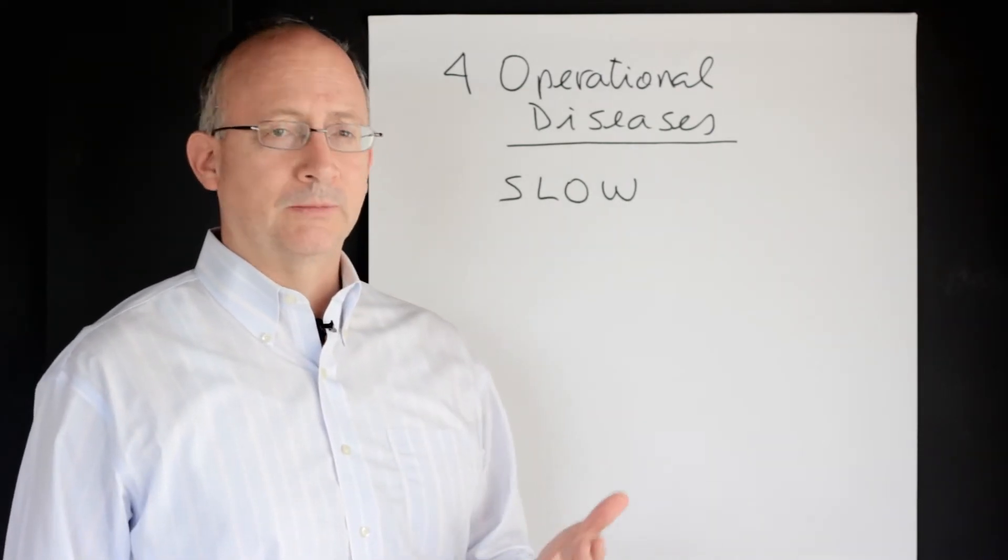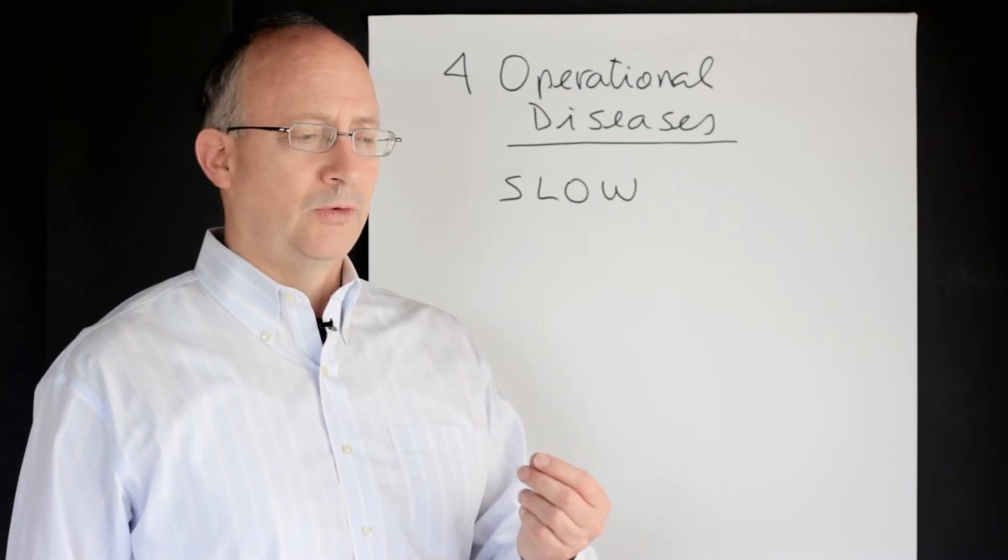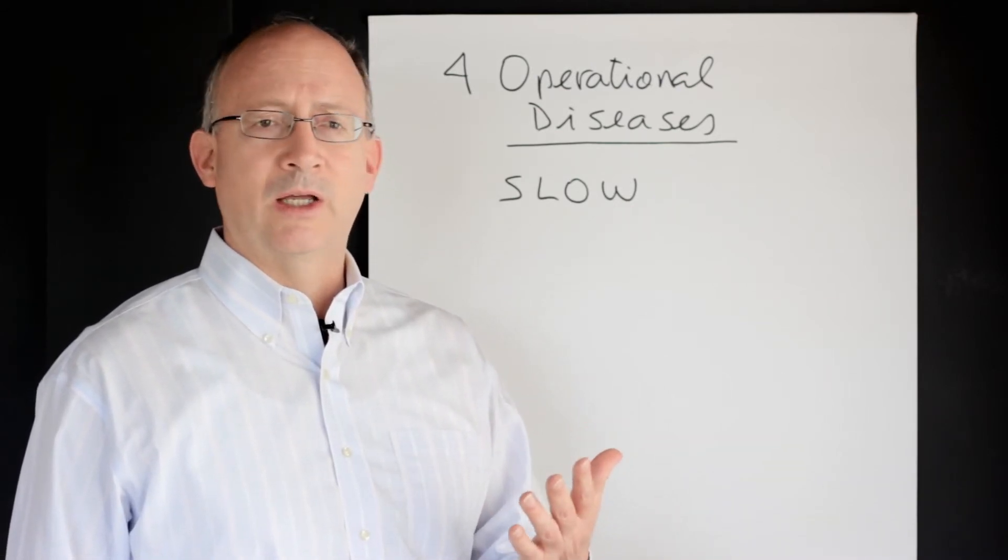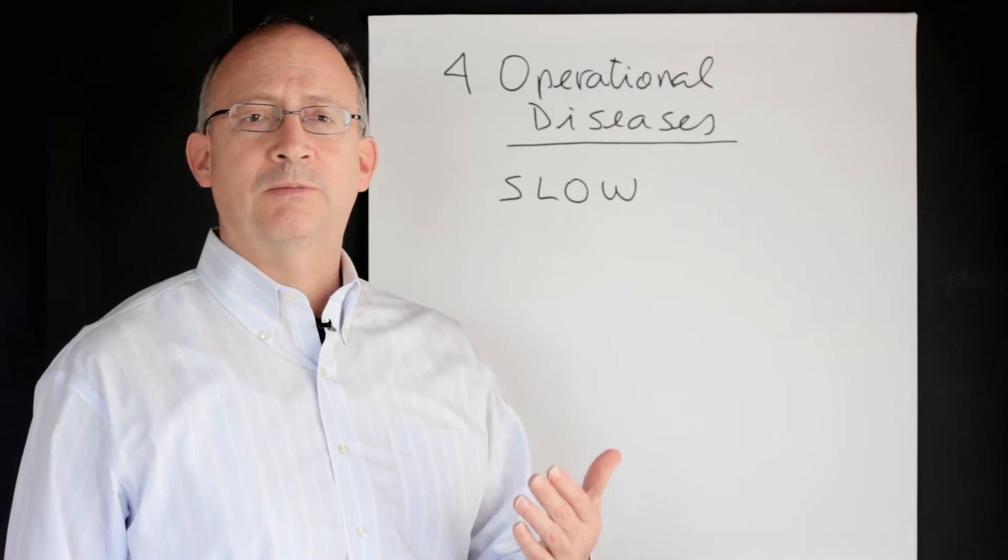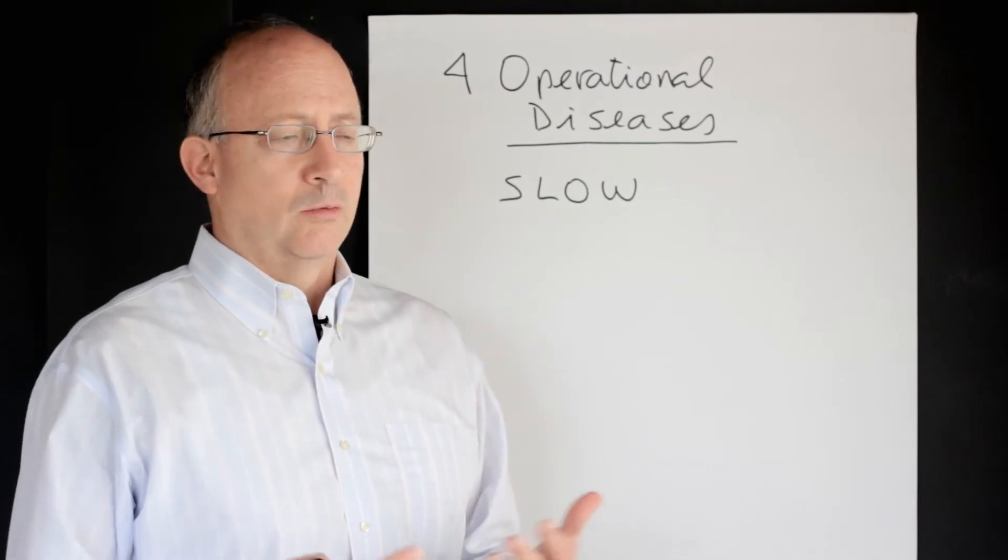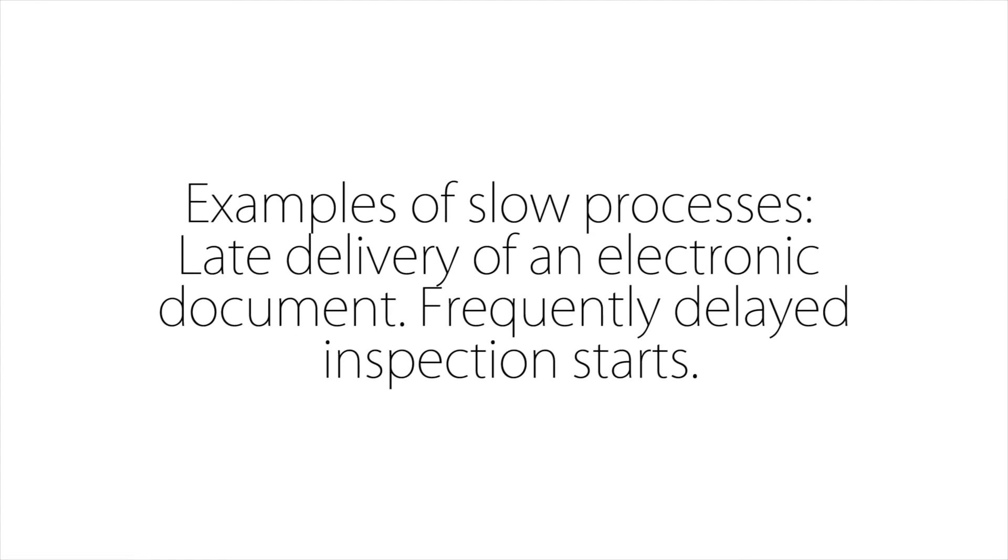Another example of a slow operation would be that when you see that your company has frequently delayed inspection starts, which could be due to a number of reasons like not having a permit, not having the right people with the right skill in the right place and so on.